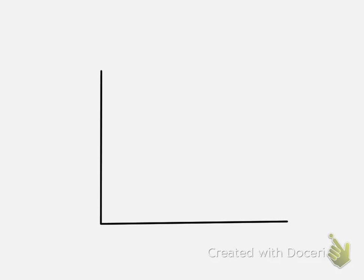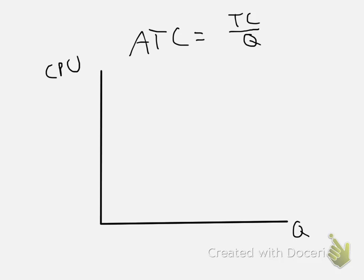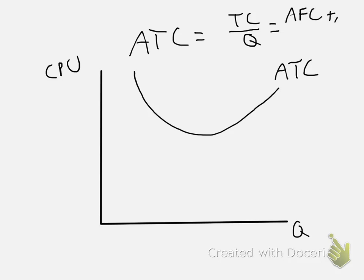Next up, we have our average total cost. Average total cost is equal to total cost divided by quantity. Quantity is on the x-axis and cost per unit on the y-axis. Average total cost also has this U shape — it goes down, and then it starts to come back up. We will talk about why that is and also its relationship to the other curves.